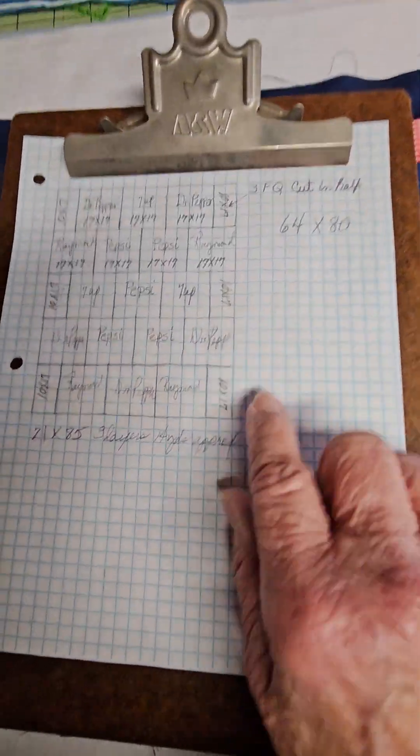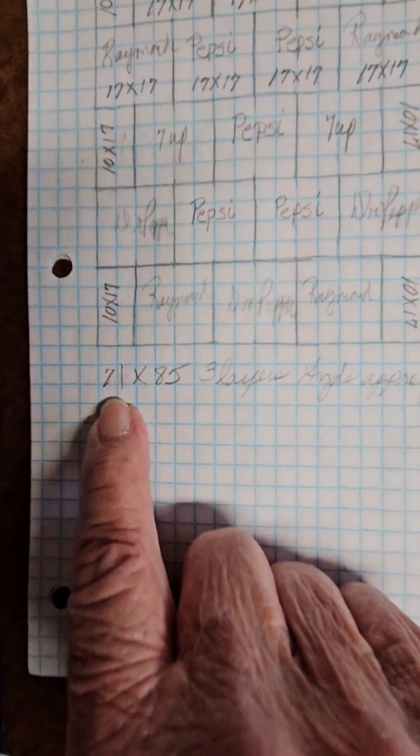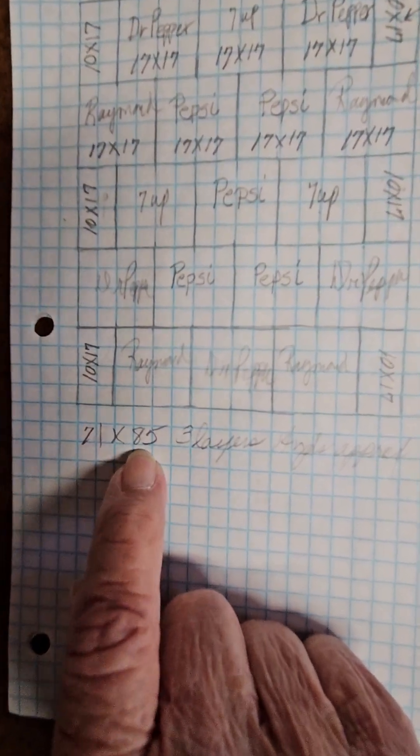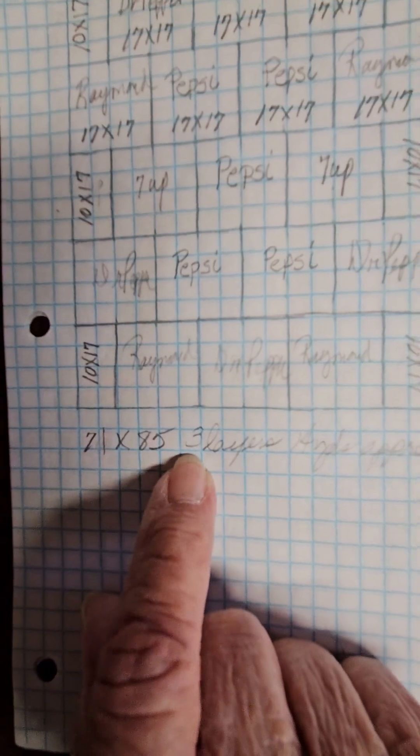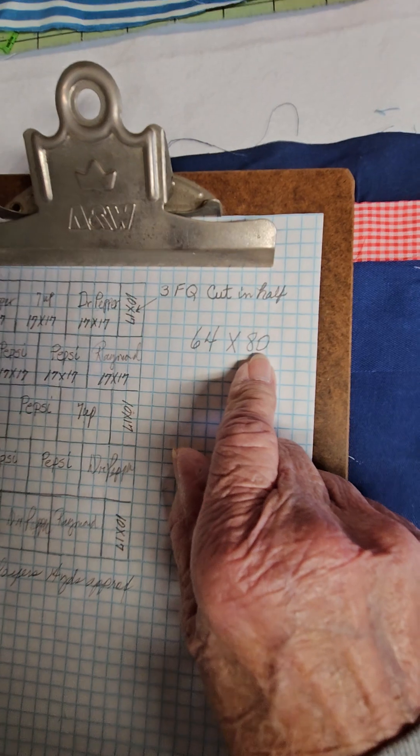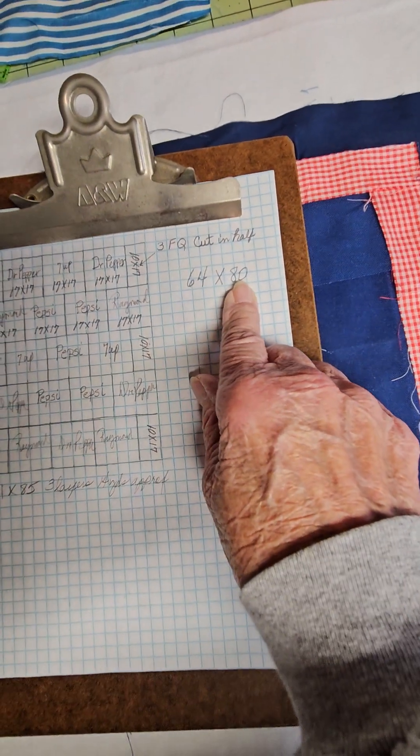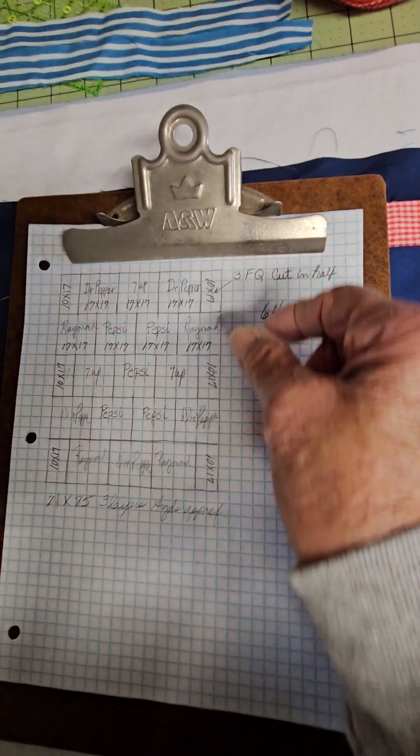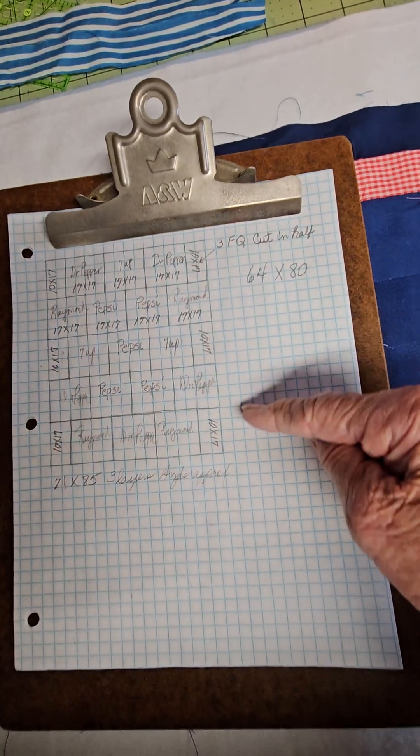I have worked this out without binding and not counting seam allowances, 71 by 85 with a finished of 64 by 80. But if I see that I'm able and that I have enough fabric, I'll make two borders on the sides to give it a drop.